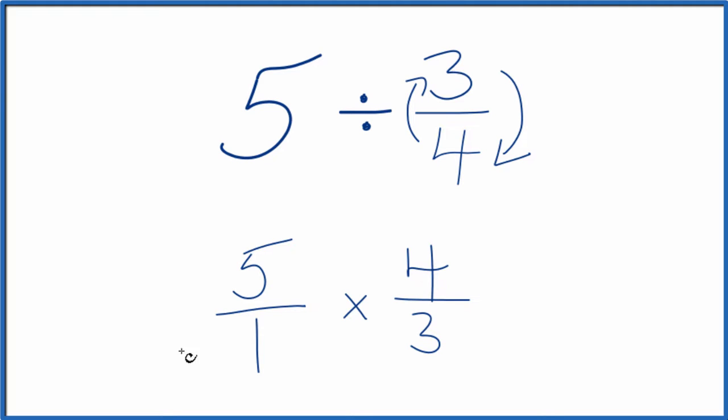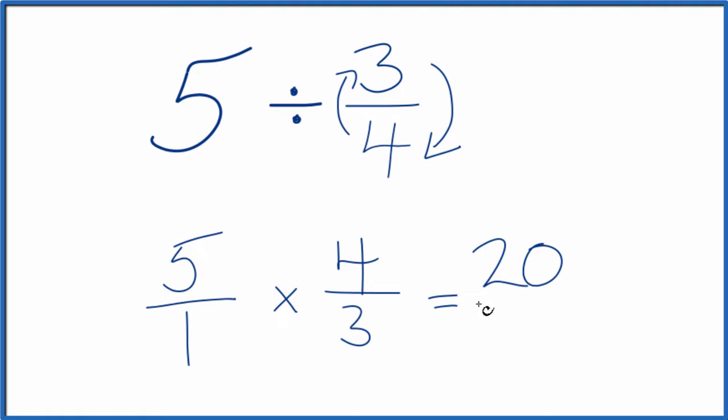Now we have two fractions that we're multiplying together. So we multiply the numerators and then the denominators, and that gives us our answer. 5 times 4, that's 20. 1 times 3 is 3.